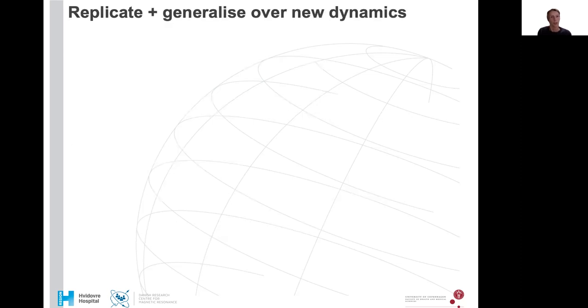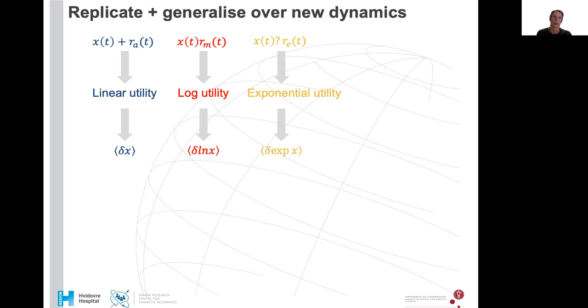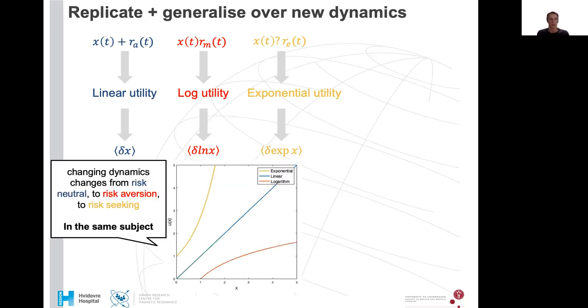We want to replicate our findings, but we also would like to generalize over new dynamics. We have these two dynamics, and what we would be interested in would be if we use a dynamic where exponential utility then renders wealth changes ergodic again, what happens? So what we would like to see is that when we confront the same subject with these three changing dynamics, we would like to see whether the subject actually changes from risk neutral linear utility to risk aversion in the multiplicative session, and whether we can then see that the same subject switches to being risk seeking in the case of the exponential utility function.